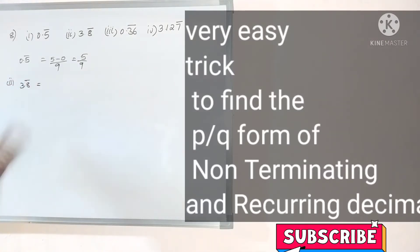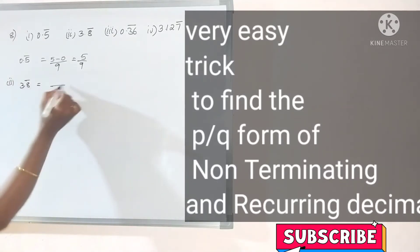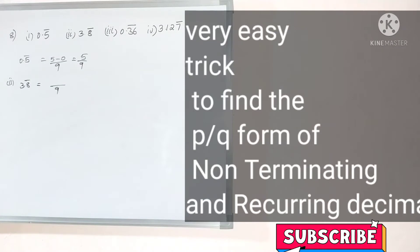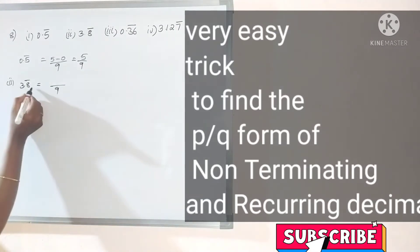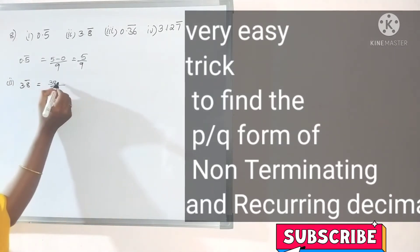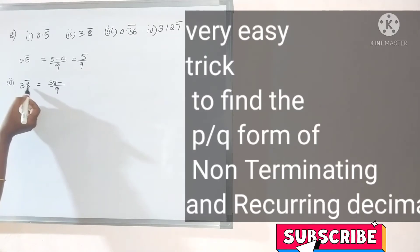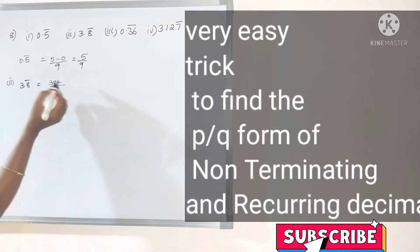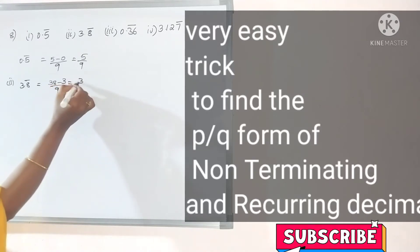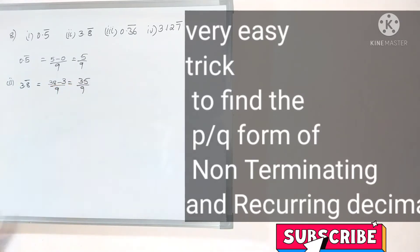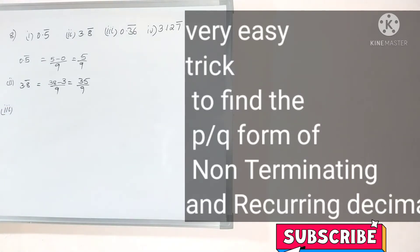Second example: 3.8 bar. How many numbers are repeating? Periodicity is one, so write one 9 in the denominator. Write the complete number without the decimal point, then subtract the digits to the left of the bar-containing number — only 3 is there. So this gives us 35 by 9. I think you are understanding, students.